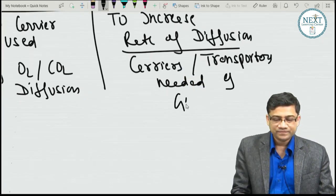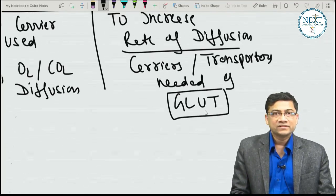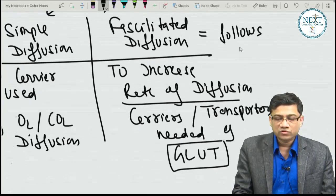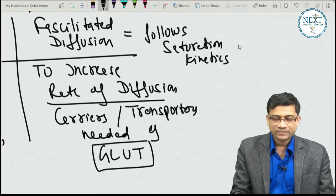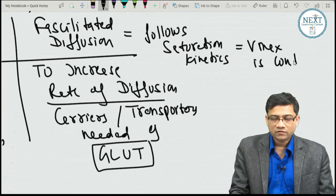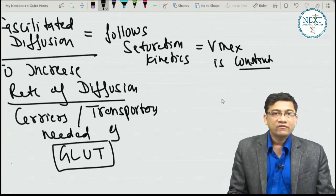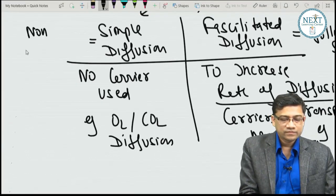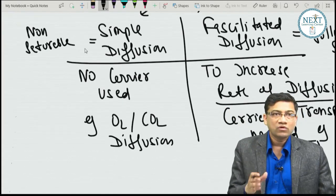An example of a carrier in facilitated diffusion is GLUT. It causes transport along the gradient. Facilitated diffusion follows saturation kinetics — a graph of rate vs. concentration shows the rate rises to a maximum Vmax, then plateaus because all transporters are saturated. Simple diffusion, in contrast, shows a straight line that keeps increasing without saturation.